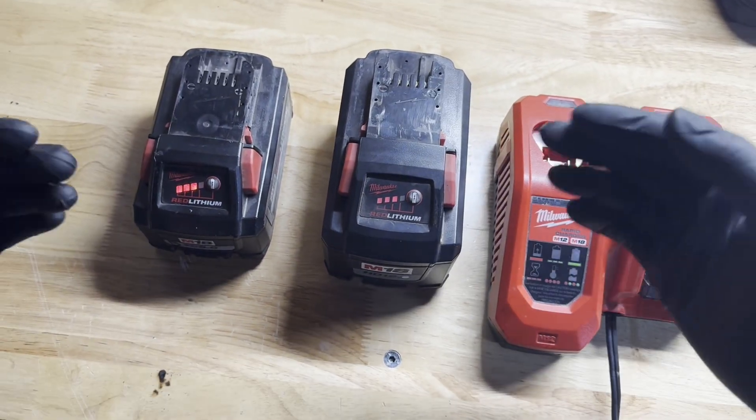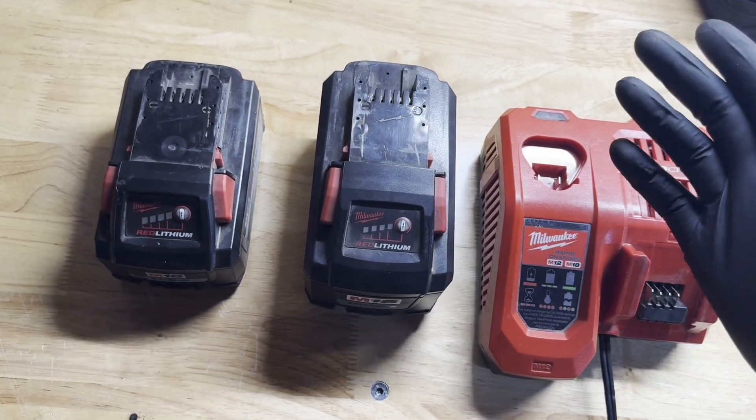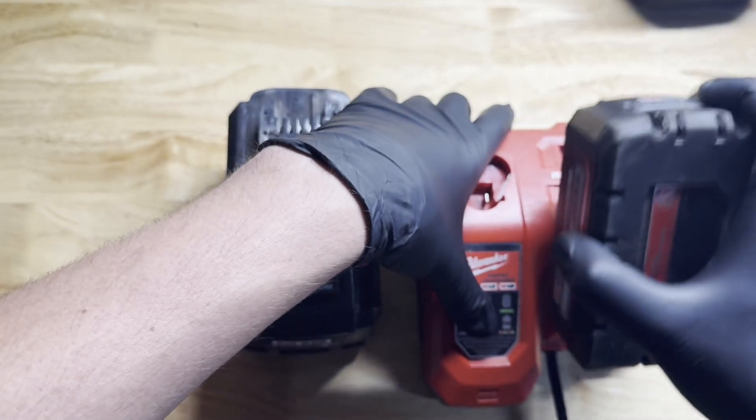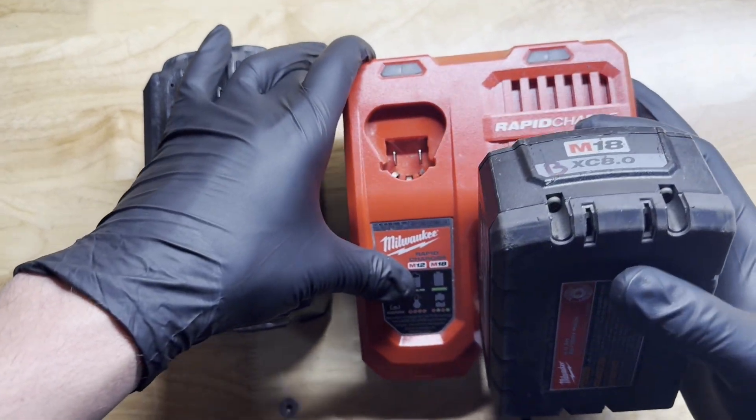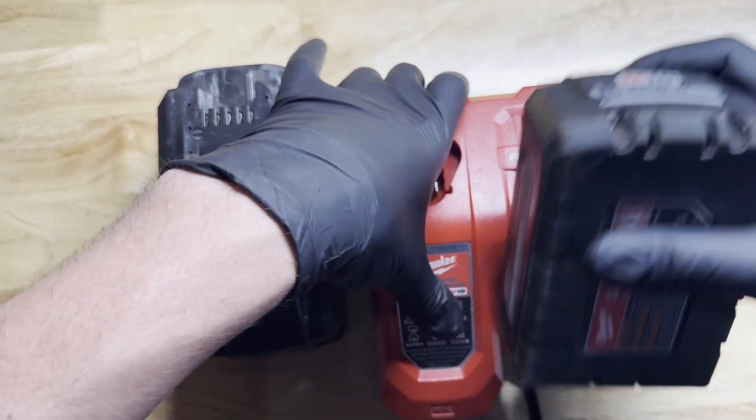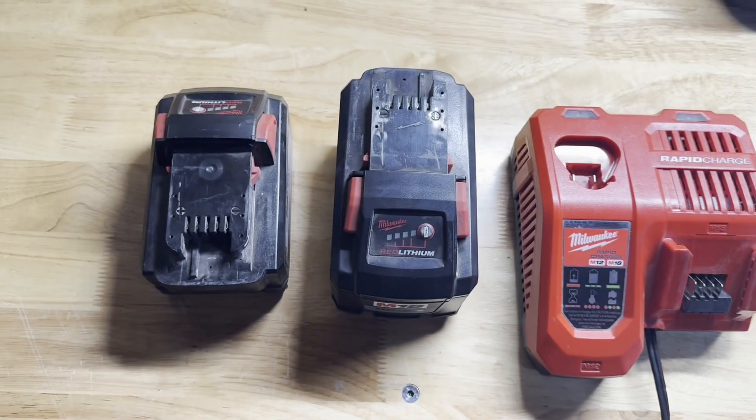So you have a battery that shows one, two, three bars, but you put it on the charger and it says it's fully charged. Here's how to fix it.